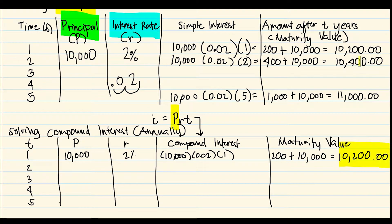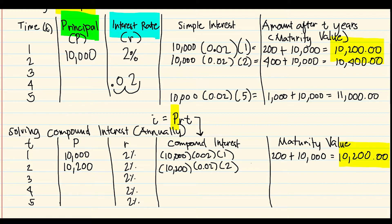So 200 + 10,000 = 10,200 pesos after year one — the same as simple interest. But in year two, the principal becomes 10,200. We multiply: 10,200 × 0.02 × 1. Notice the time is one because it's like re-depositing for one year each time.